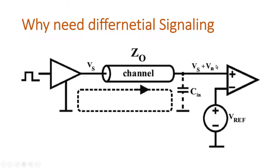We can design high-sensitivity receivers, but this alone doesn't solve the problem. Now the signal is at the millivolt level, and noise also induces a signal Vn which is also of the order of millivolts. Since the actual signal and the noise-induced signal are of the same order, there are more chances of erroneous bits at the receiver side, even with a very sensitive receiver. The solution is differential signaling.